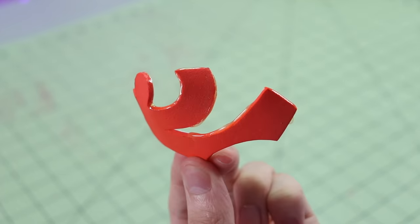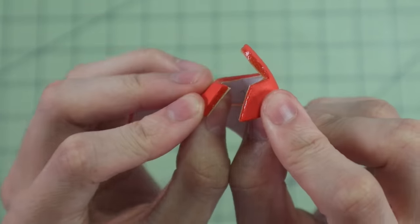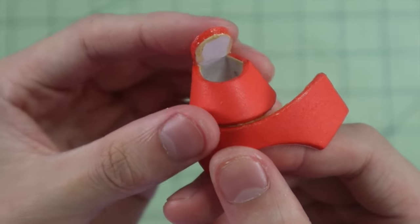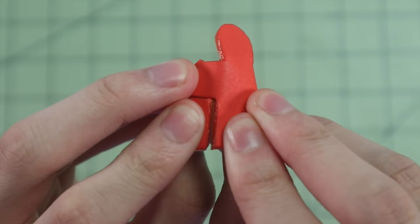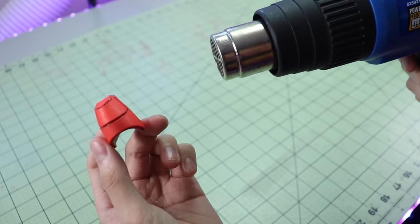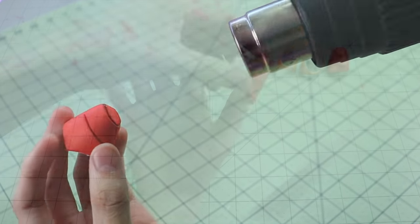Give the contact cement a moment to dry and become tacky, and then I can press all the edges together to form a fingertip. Again, you can heat seal this foam, but make sure not to stay in one spot too long because it's really easy to burn the foam by accident.